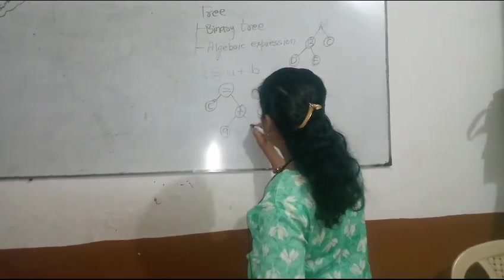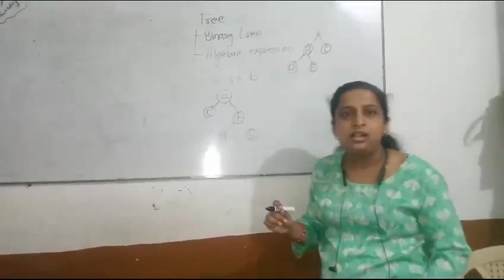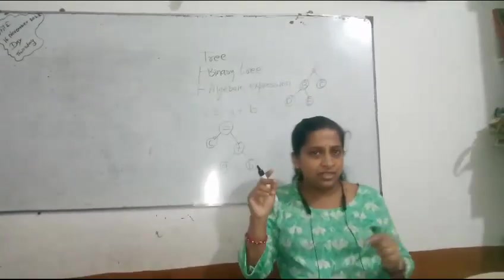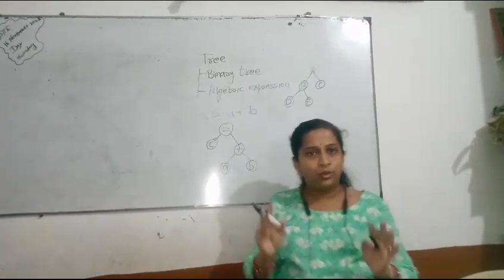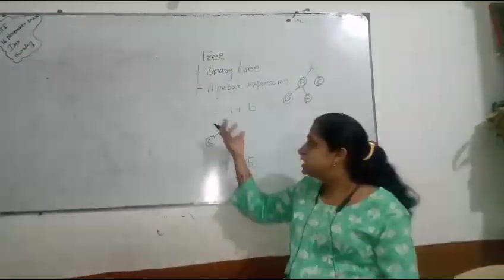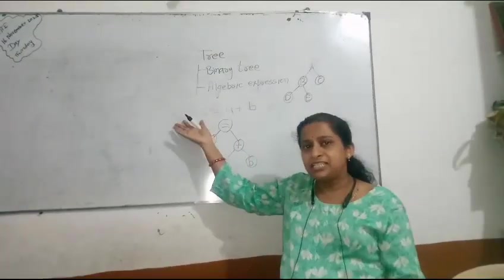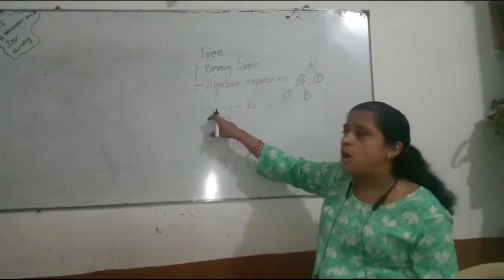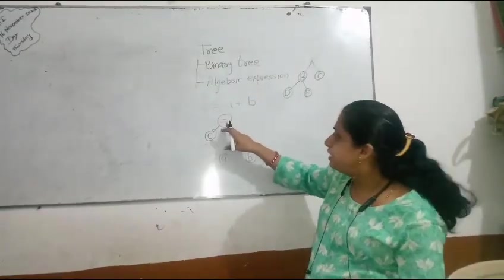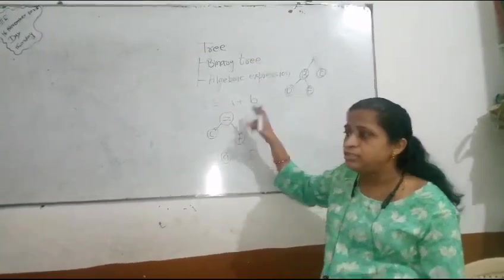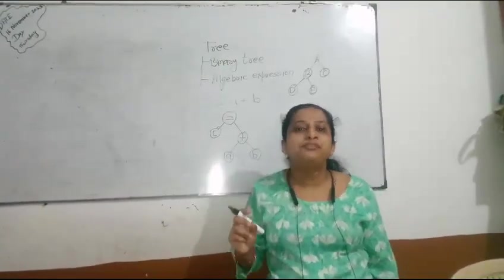See students, this is how simple it is to convert an algebraic expression into binary format. First step, you have to convert it into two parts. Bi means two, that's why you have to convert your expression into two parts, RHS and LHS. Then, the particular operator will be your root node and all the variables will be leaf nodes.